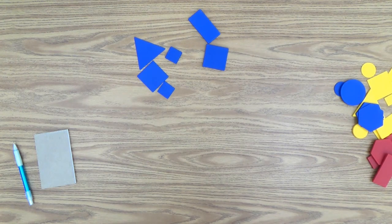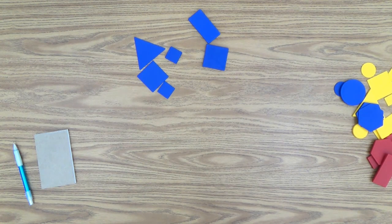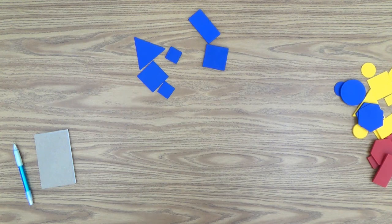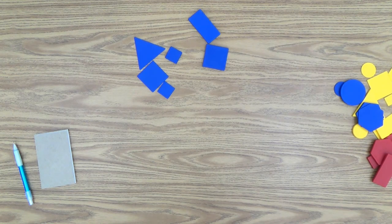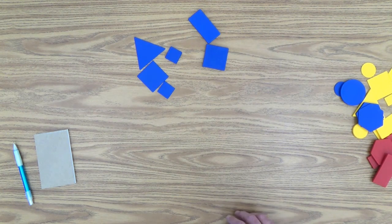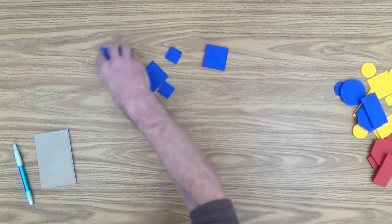And then a child might ask, is your block a square? And you would say, yes, it is a square. So of course, now they can eliminate any block that isn't a square, which is this rectangle, this triangle.